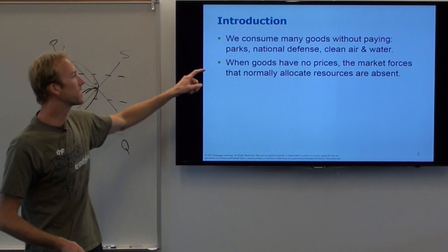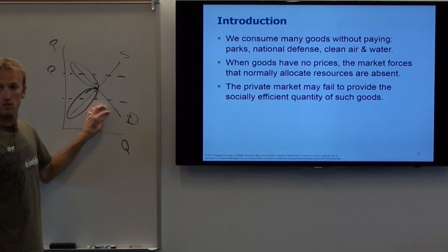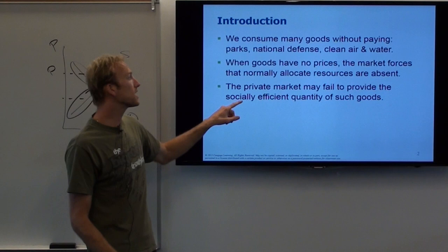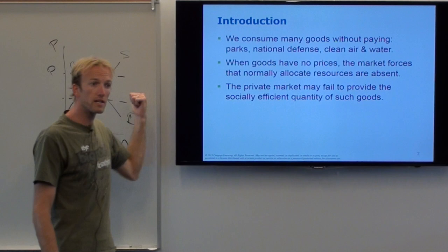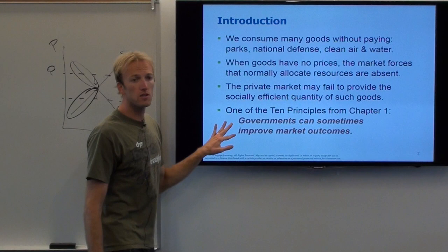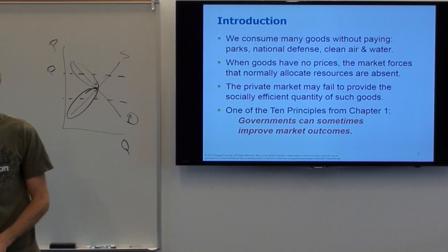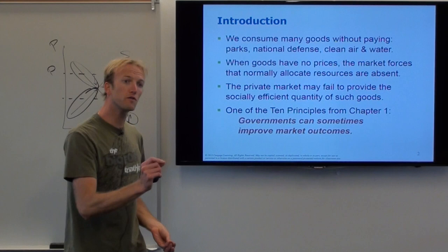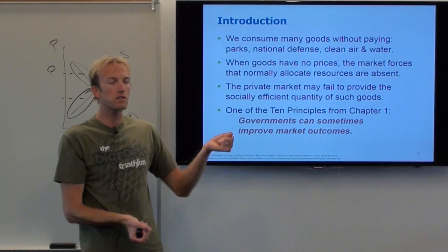The private market all by itself, with no government involvement, is not going to know how much quantity to produce because there's no price. The price is what tells suppliers and demanders how much to produce and consume. So we can turn to one of our big principles: governments sometimes can improve market outcomes. Governments are really useful when we have a broken marketplace — a market failure. Because of the missing price, this is going to be just like a market failure.